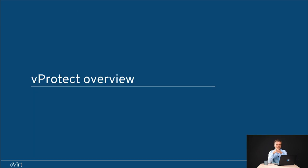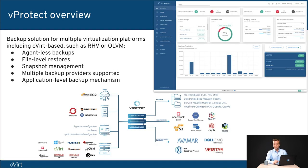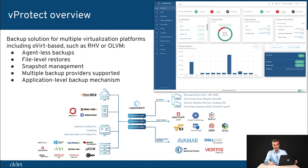Now let's have a short overview of vProtect itself. We know how to extend anything in the OVirt UI, but we would like to make it more useful. We would like to have a backup solution that is going to process all of the backups and restores. vProtect is a solution for multiple virtualization platforms - today we are going to focus on the OVirt base. We wanted to extend OVirt capabilities with agentless backup capabilities and allow file level restores or snapshot management as well.